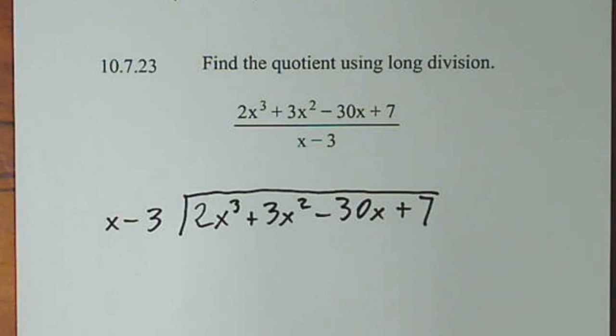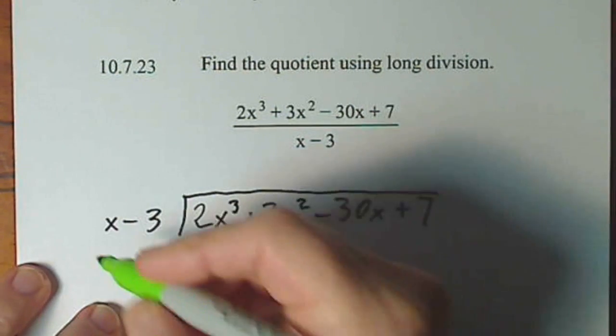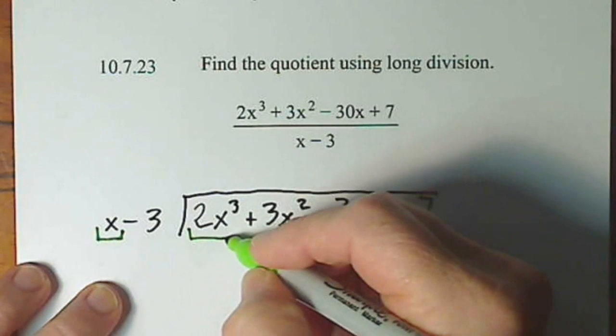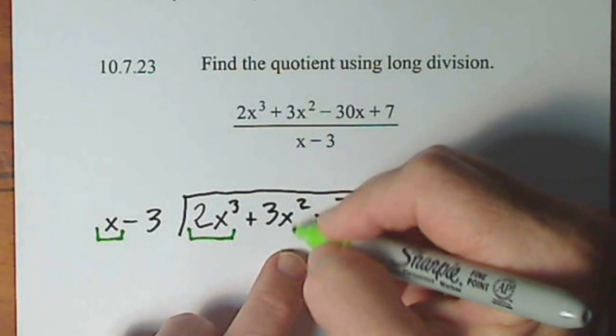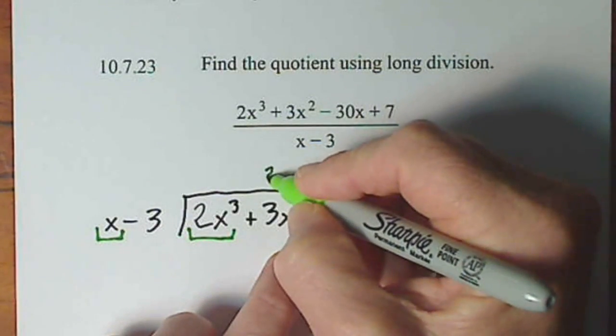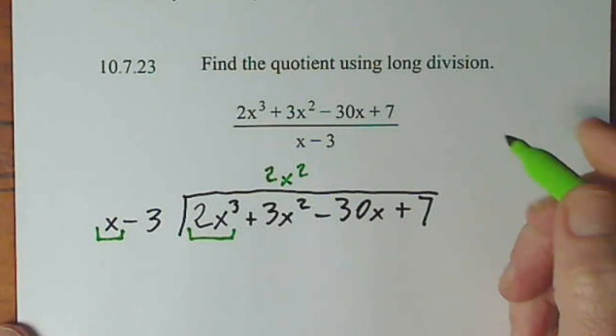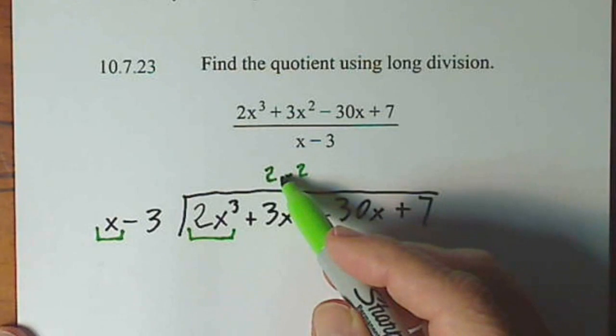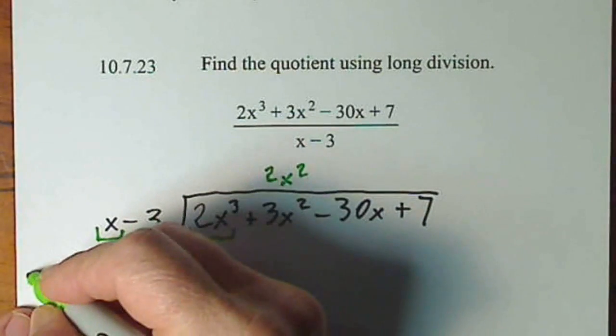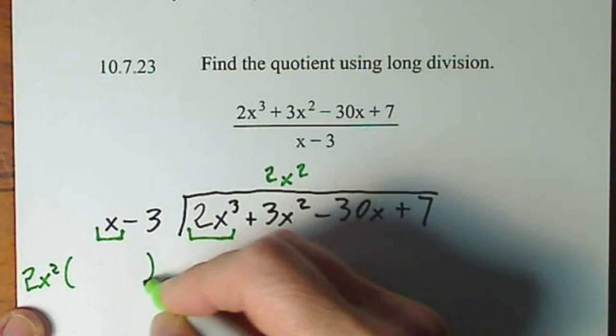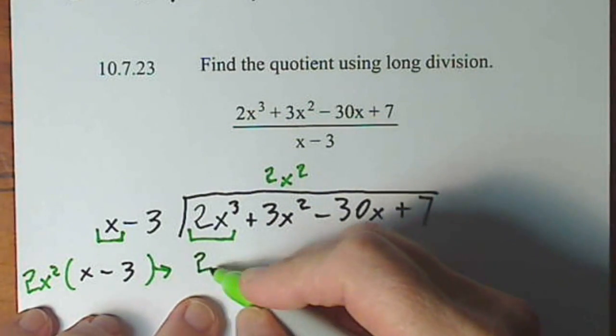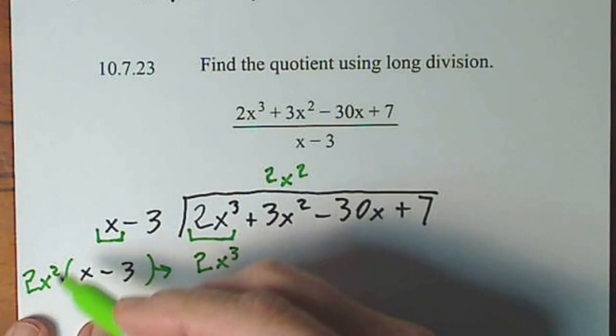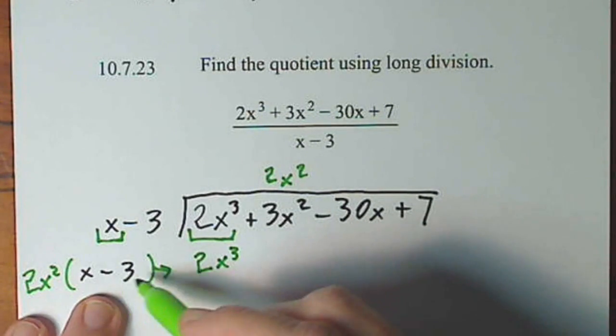When you're doing long division, you focus on the first term and the first term, and you just say how many times does x go into 2x to the third? It goes into 2x squared times. So I'm going to line it up over my like terms. 2x squared. And just as you do with regular long division, I multiply this times this. So 2x squared times x minus 3, 2x to the third. I'm distributing 2x squared to each term here, minus 6x squared.